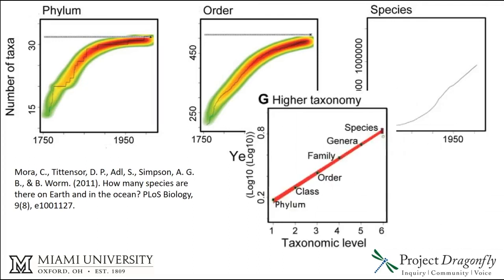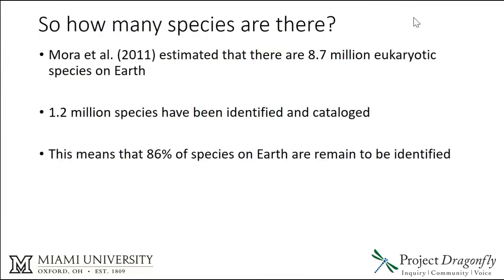They got around this problem by looking at the relationship between taxonomic level — from the largest level of phylum all the way down to the lowest level of species — and the accuracy of estimates of species numbers. At the phylum level, we're fairly confident we know how many phyla there are on Earth, and the same at class, order, and family level. These make a straight line that you can use to predict the number of species, and that's just what they did. The answer they arrived at was 8.7 million eukaryotic species on Earth. Since 1.2 million species have been identified and cataloged so far, that means 86 percent of species on Earth remain to be identified.